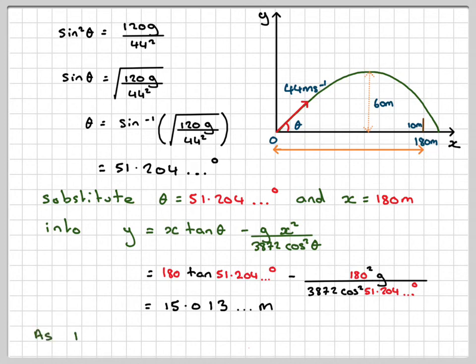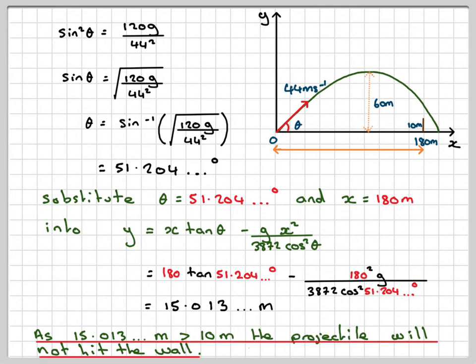But you need to write some sort of conclusion, or you won't get the final mark. So we would say that as 15.013 metres is bigger than 10 metres, the projectile will not hit the wall.